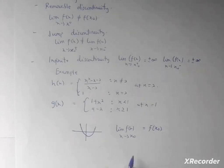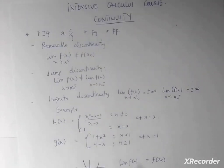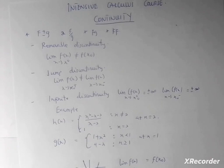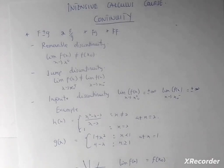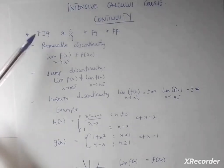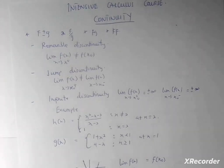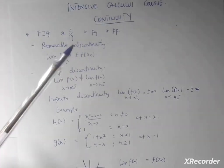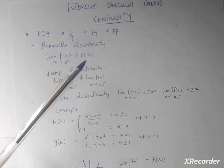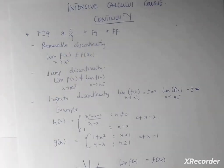Now let's look at the properties of continuity. If you have any two functions f(x) and g(x), and both f and g are continuous, then f plus or minus g will also be continuous, f over g will also be continuous, f times g will be continuous, and k — a constant multiplied by any of the functions — will still be continuous.